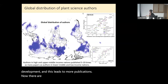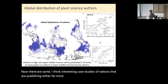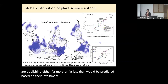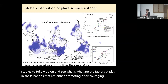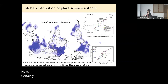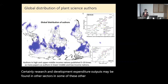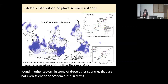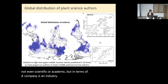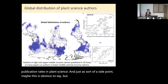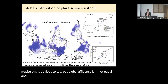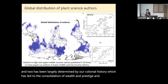There are some interesting case studies of nations publishing either far more or far less than would be predicted based on their investment. Global affluence is not equal, and has been largely determined by our colonial history, which has led to the consolidation of wealth and prestige and scientific resources in select locations of the world. And it seems this is having an effect on where plant science research is being done.